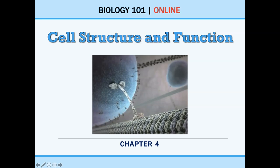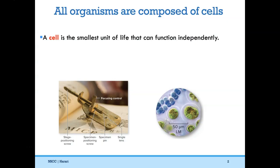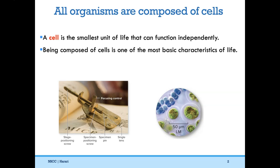Hello everyone and welcome to another recorded lecture of BIO 101 online. Today we'll be talking about chapter four, which is cell structure and function. As we mentioned in chapter one, all organisms are composed of cells, and a cell is the smallest unit of life that can function on its own. Being composed of cells is one of the most basic characteristics of life — if you are not made of cells, you are not alive.